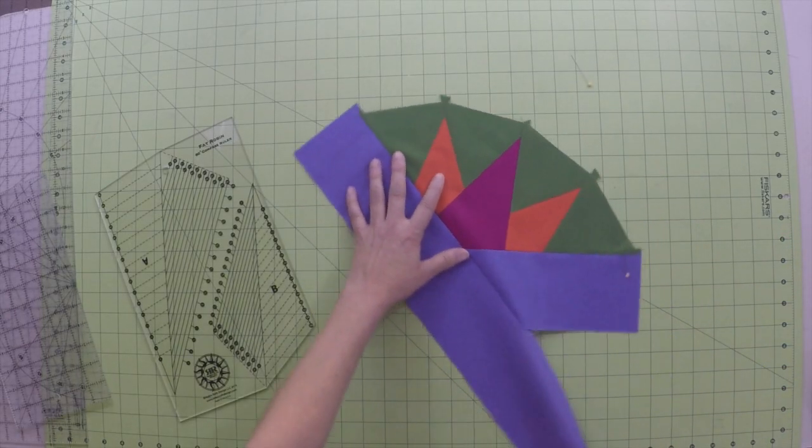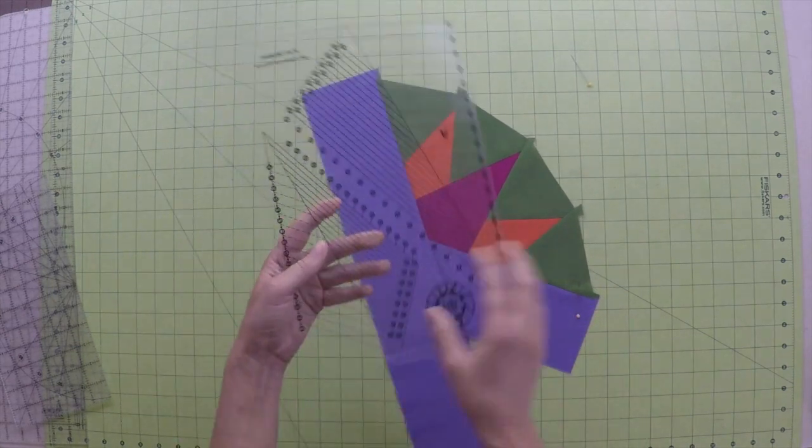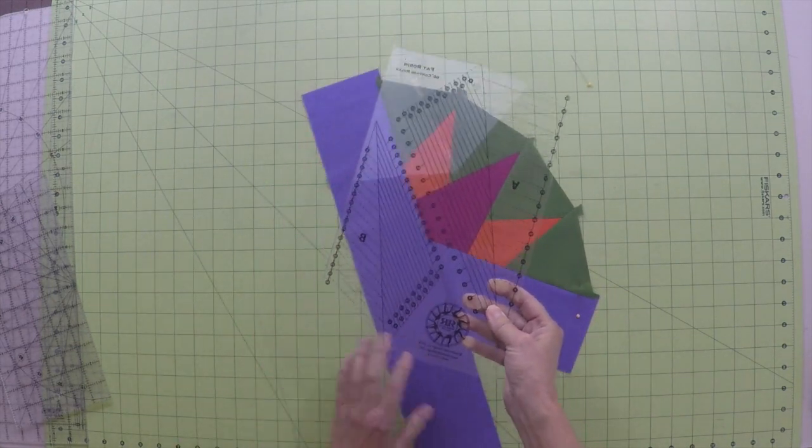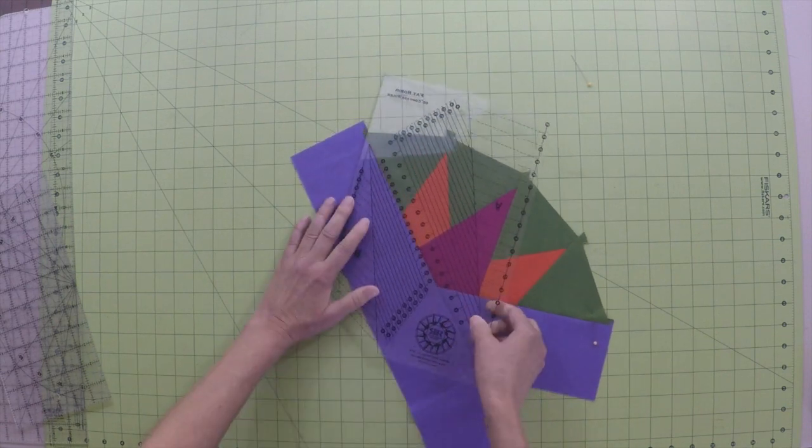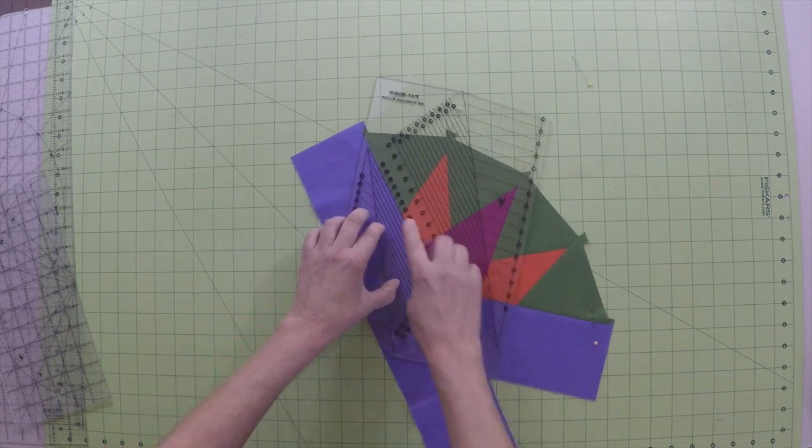Now you will once again place a pin marker at the top of kite B, only this time you will have to turn your fat robin ruler over and use the reverse side to line it up for placing a pin at the top of kite B.